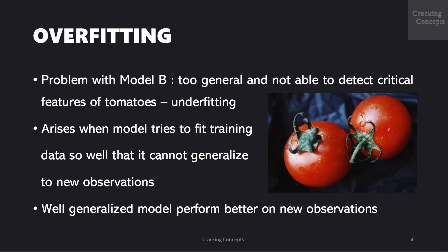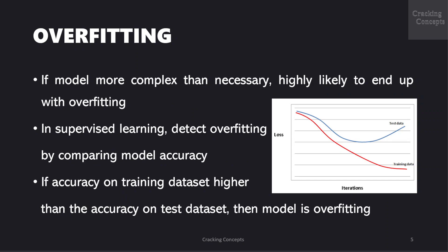Overfitting arises when a model tries to fit the training data so well that it cannot generalize to new observations. Well generalized models perform better on new observations. Now if a model is too complex than necessary then it is highly likely we end up with overfitting. Underfit models do not generalize well to both training and test data set.